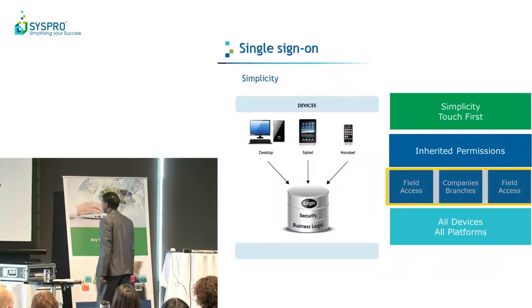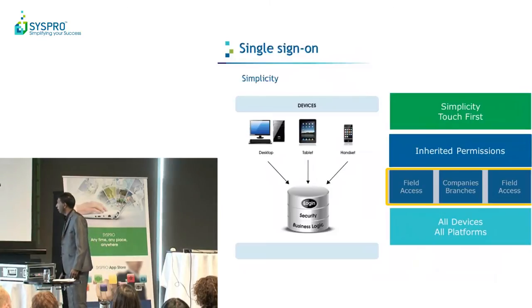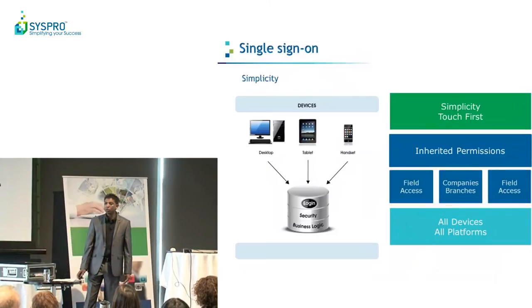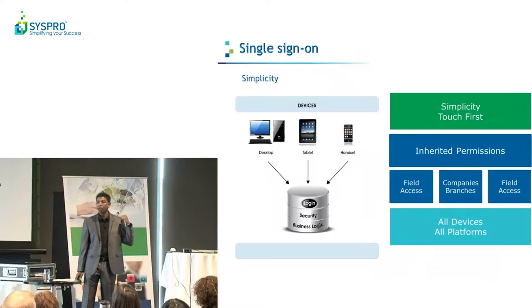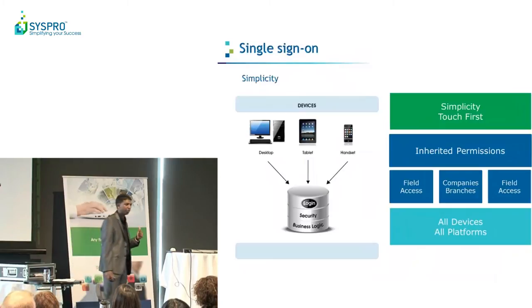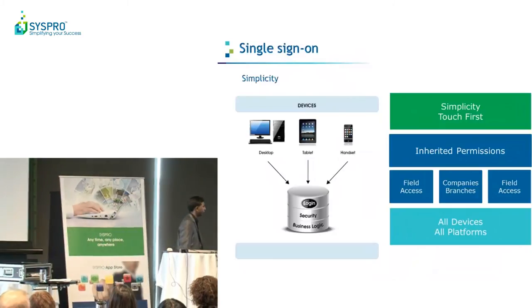Inherited permissions include field access, companies, branches, and so on. We also support all devices, all platforms — you can be running on a phone, a tablet, a desktop. We'll even run on Opera on a Mac. We're not prescriptive of where you should run Espresso.